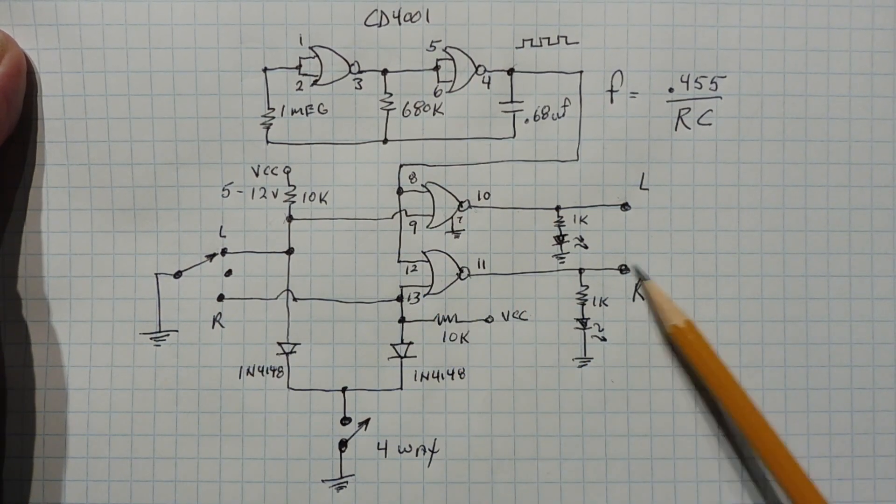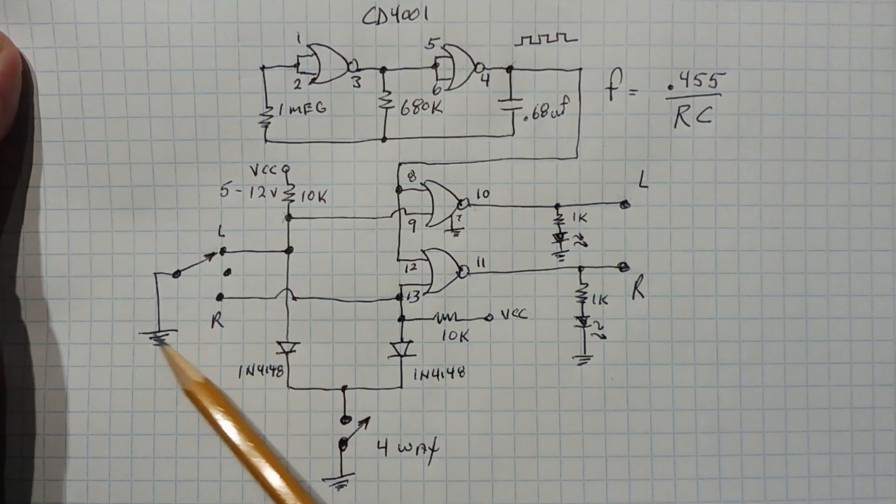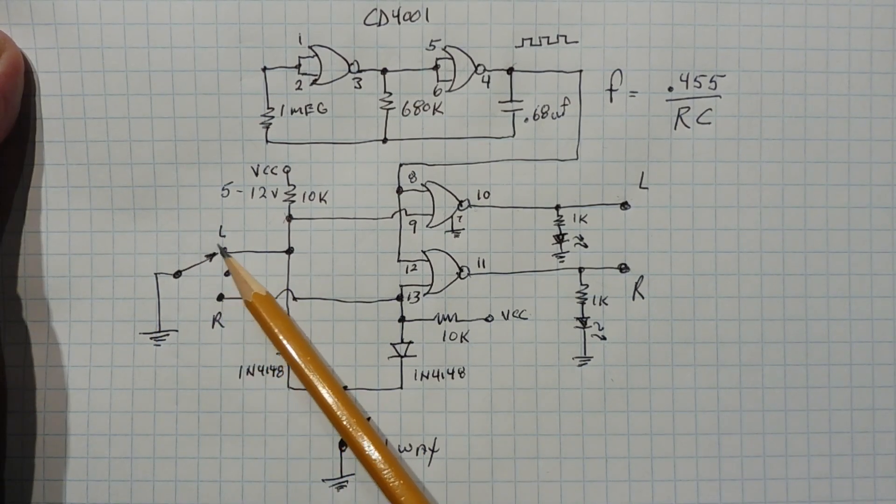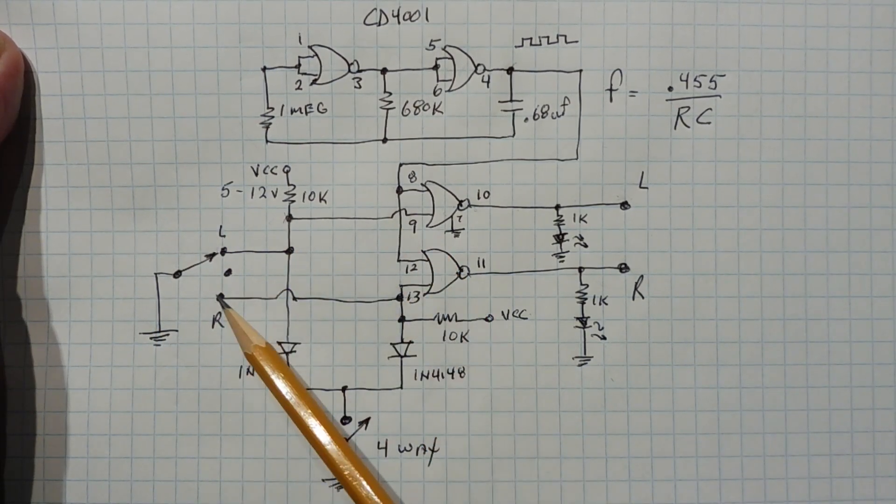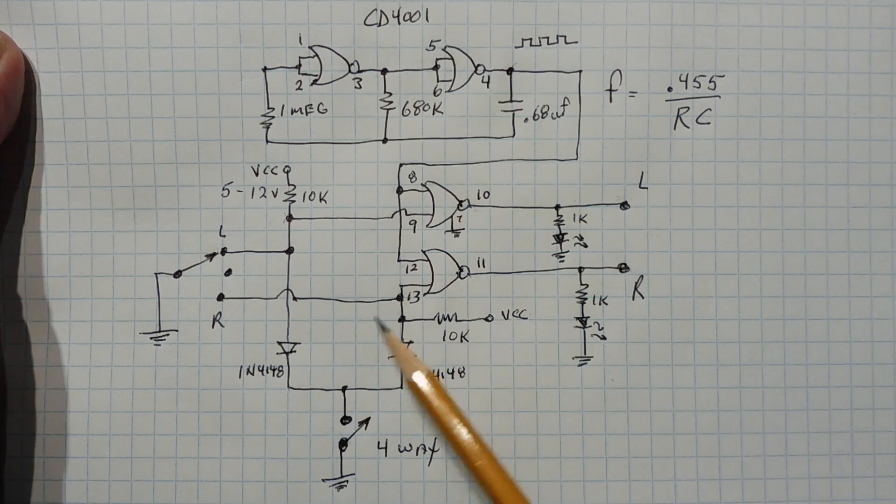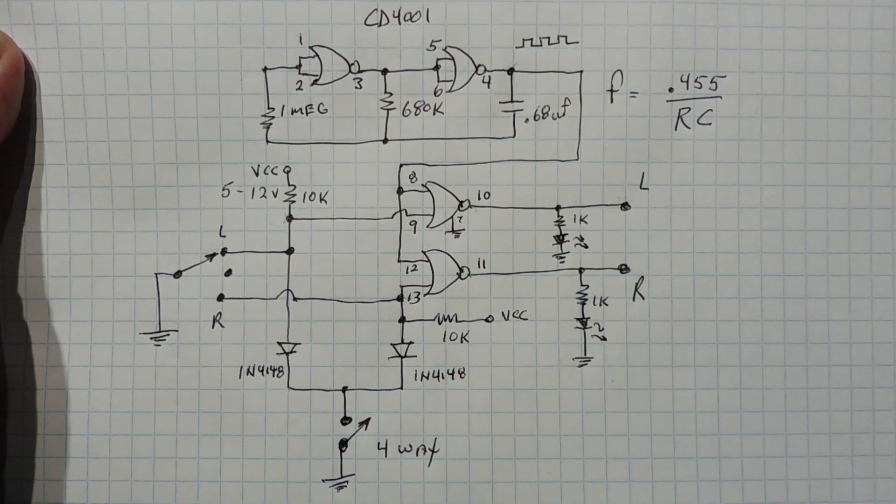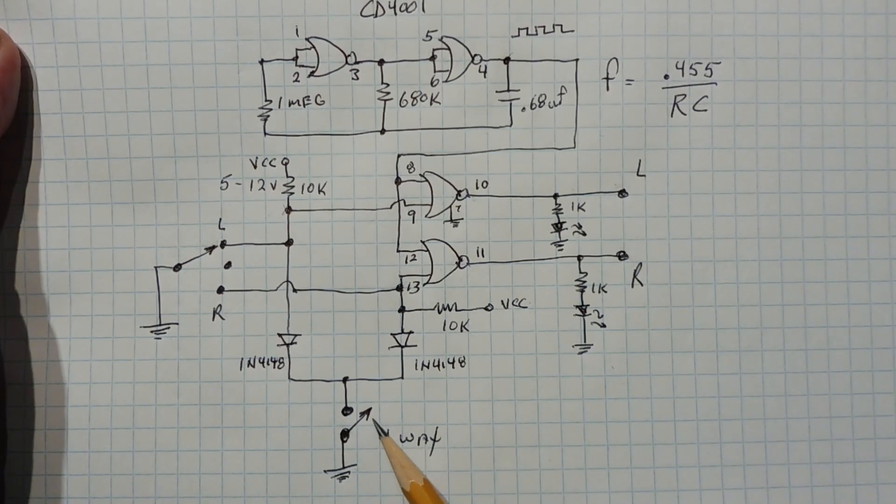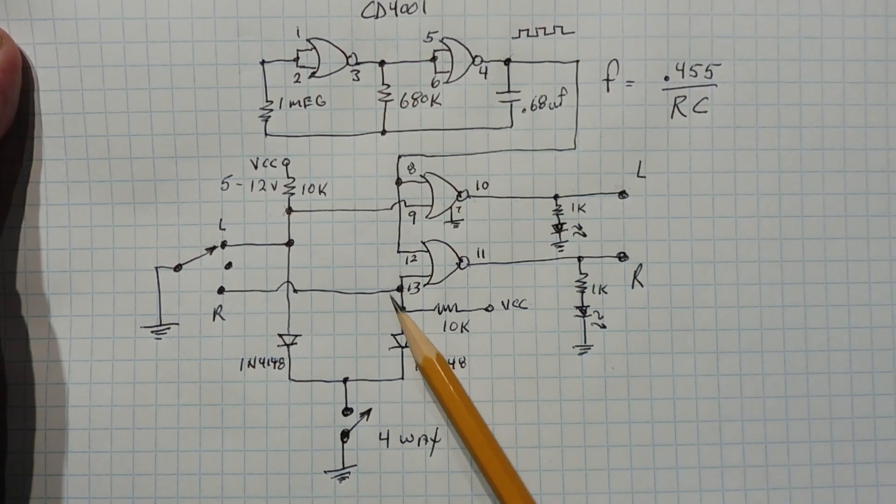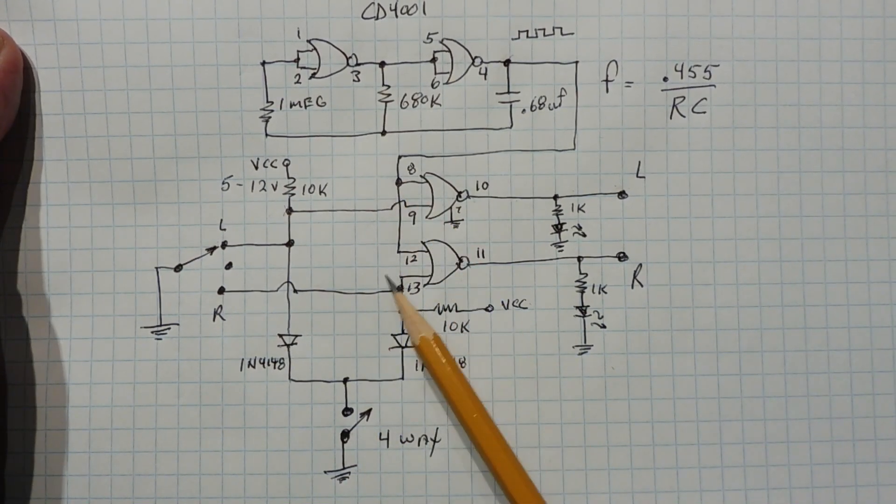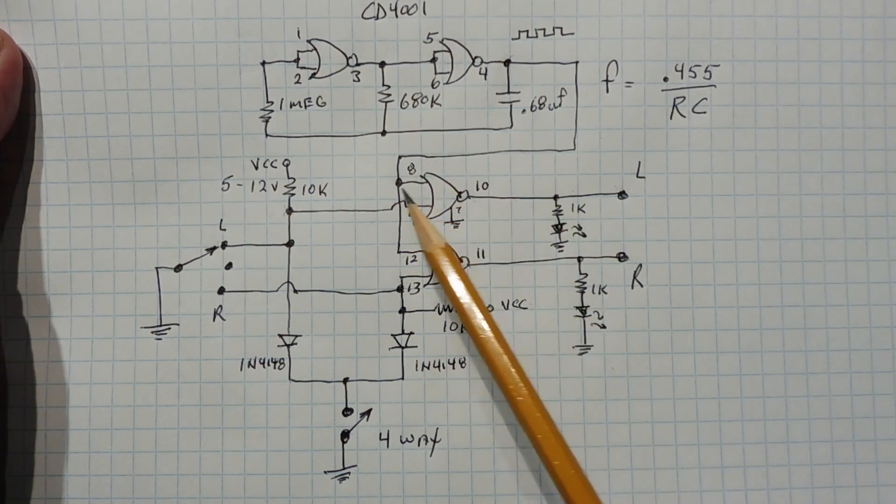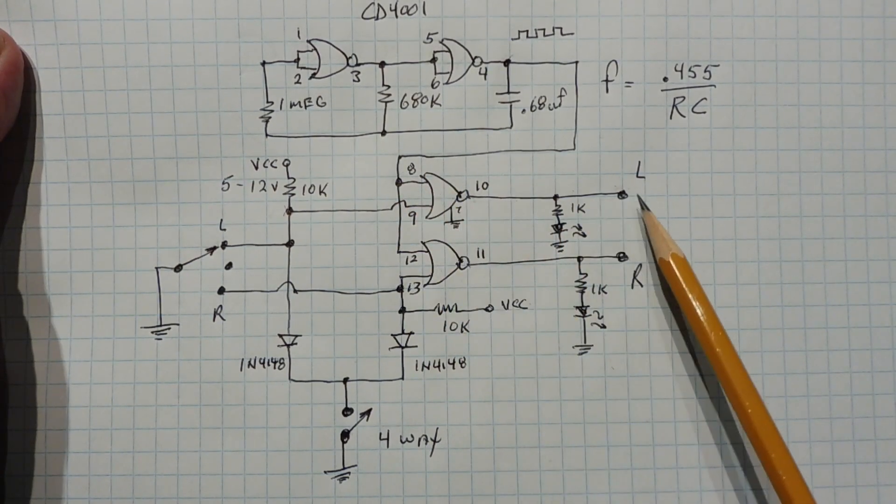And we do that with our left-right switch. So in the left position it grounds pin 9, in the right position it grounds pin 13, and it gates the flashing clock to the left or right outputs. Now for the four-way, we switch that on and it pulls both of them low. It pulls pin 9 and 13 low, which enables the clock circuit to go through the gates to drive the left and right. So we'll have a four-way flash.